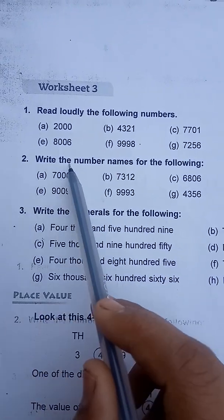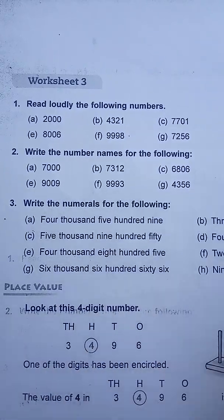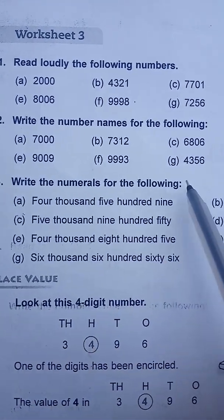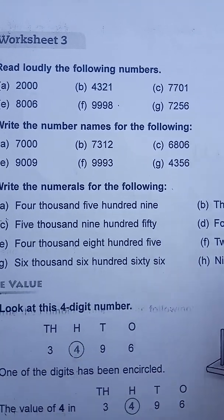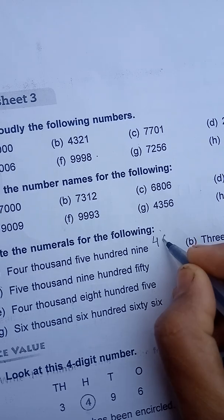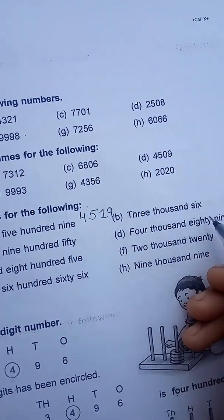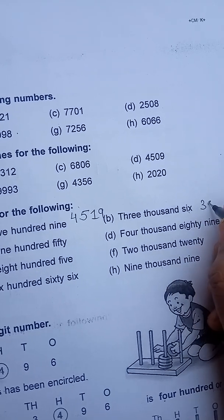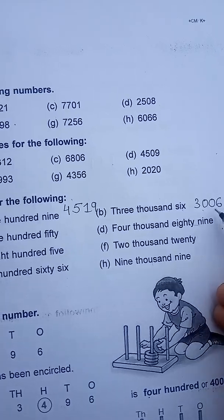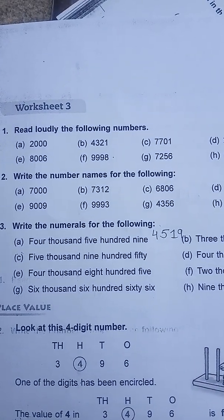Then write the number names of the following — you will have to write the number name of each. For example: 3036 is three thousand and thirty-six; 3519 is three thousand five hundred and nineteen; 3006 is three thousand and six — note that the middle digits are zero, so it is three thousand and six.